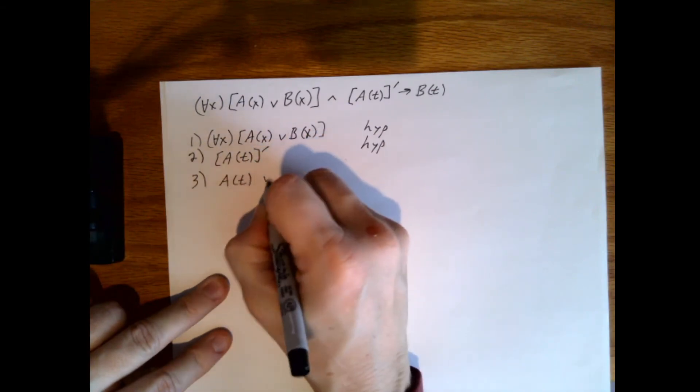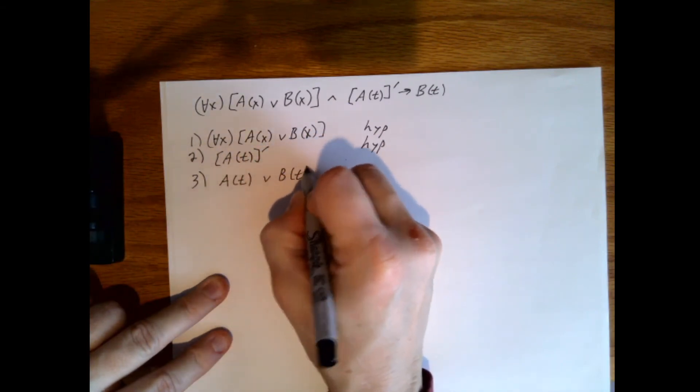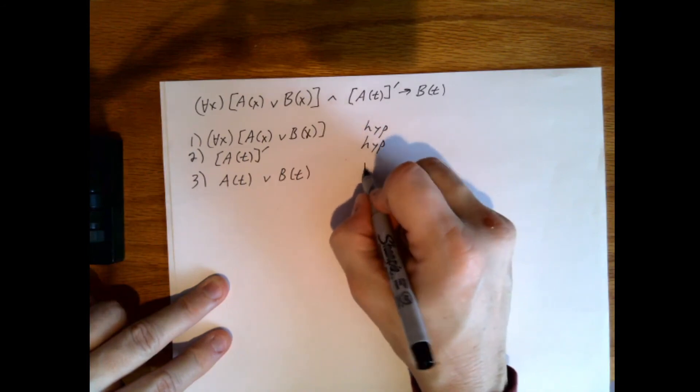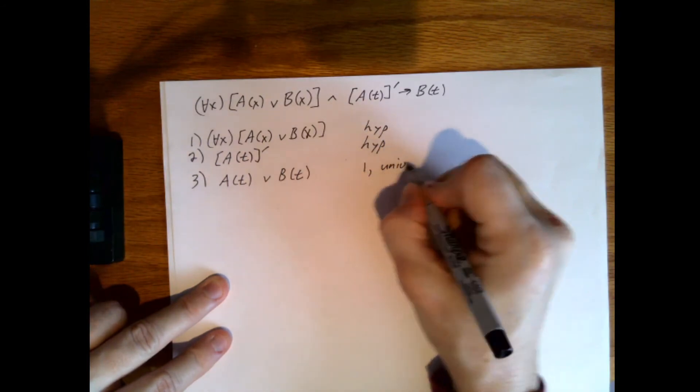So a of t, a of t or b of t. This must be one, universal instantiation.